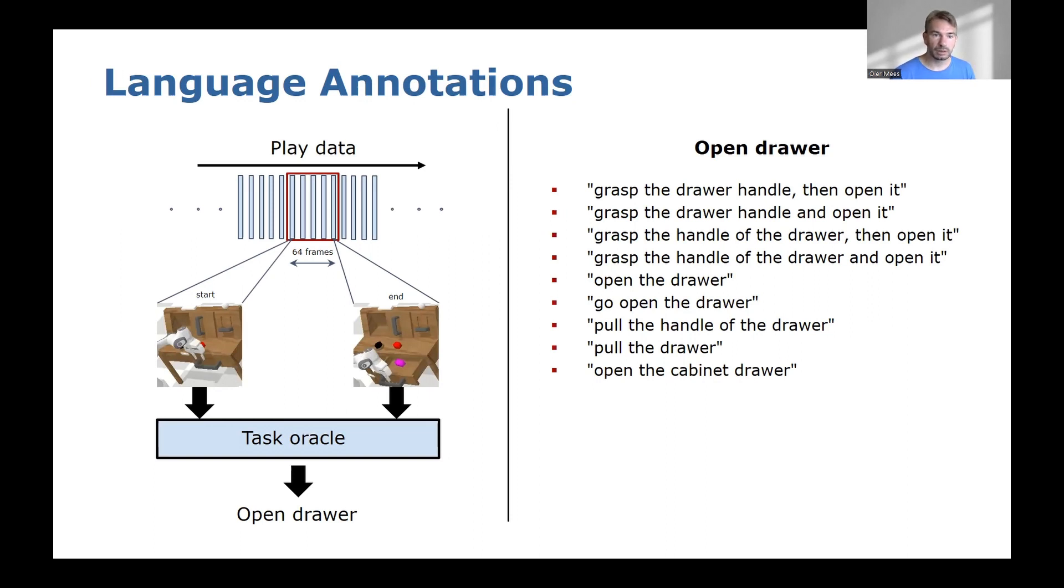For example, 'grasp the drawer handle then open it,' or 'open the cabinet drawer,' etc. And this sequence will get this language annotation as a label.